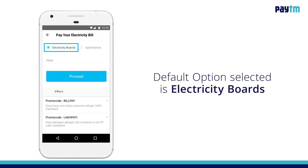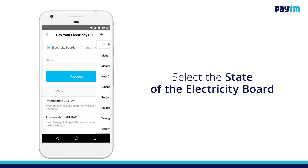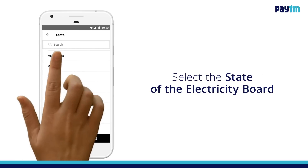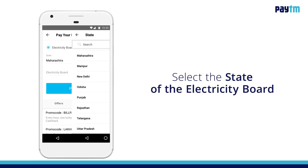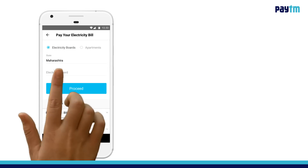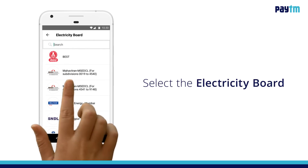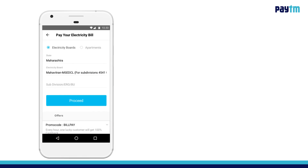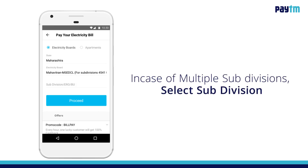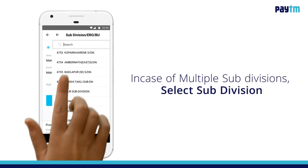The default option selected is Electricity Boards. Select the state of your electricity board, then select your electricity board. If there are multiple subdivisions, please select your subdivision.